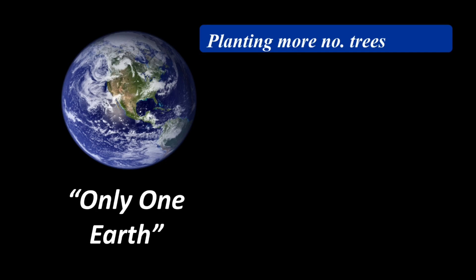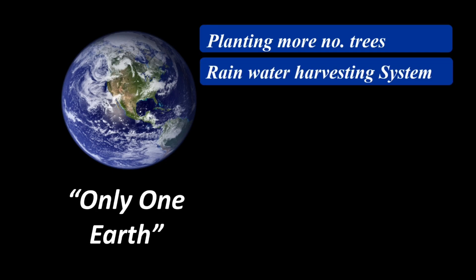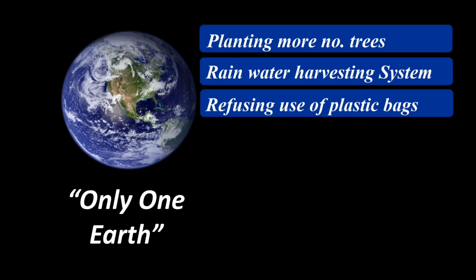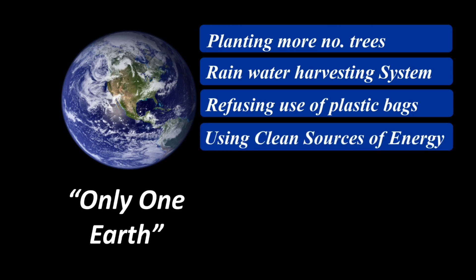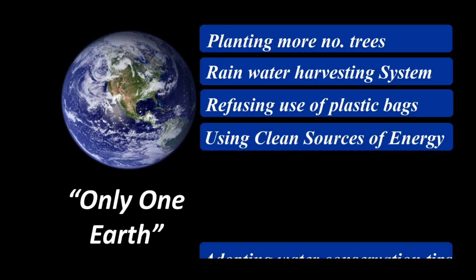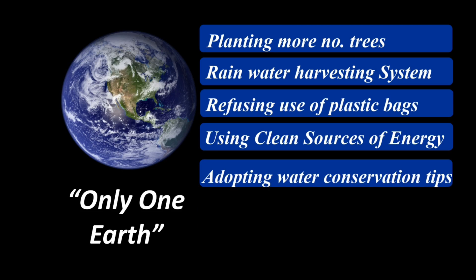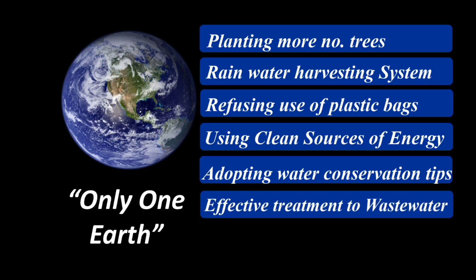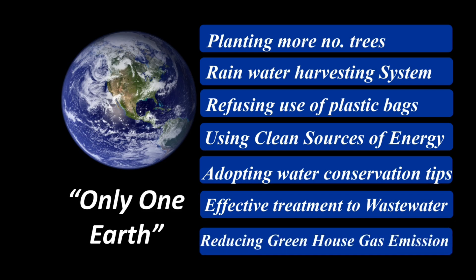We people as individuals can make a positive impact to restore the balance of Earth by planting more trees, by implementing rainwater harvesting systems at your houses, by refusing to use plastic bags, by using clean sources of energy, by adopting water conservation tips as I mentioned in my World Water Day video, by providing effective treatment to wastewater, and by reducing greenhouse gas emissions.